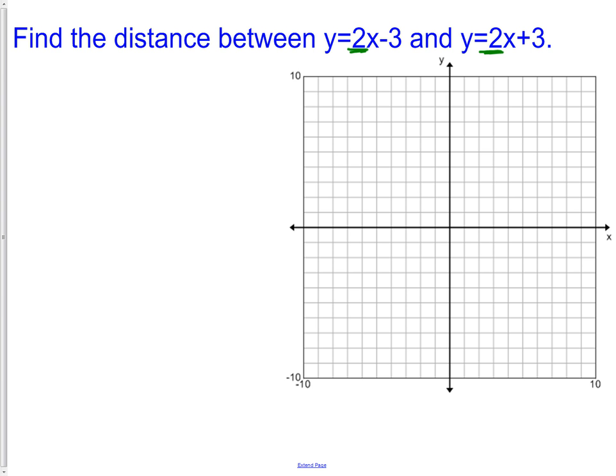Remember, to graph lines, we can simply use, first use the y-intercept of -3, and then we use the slope, up 2, over 1. We now have two dots. That's enough to graph our line. Remember, any two points is enough to determine a line.